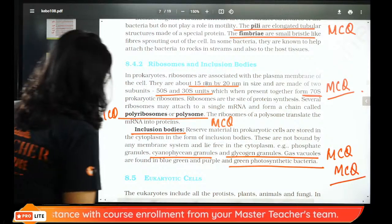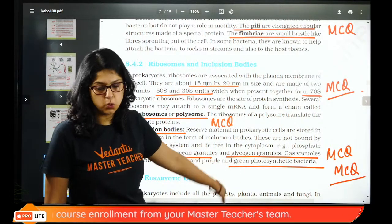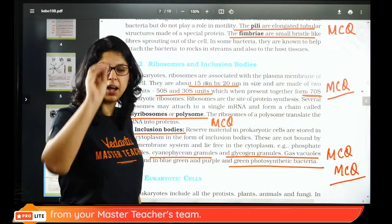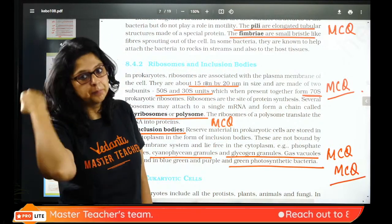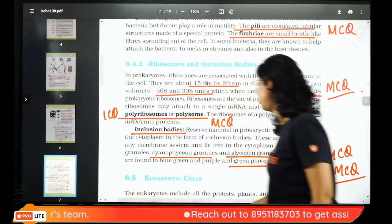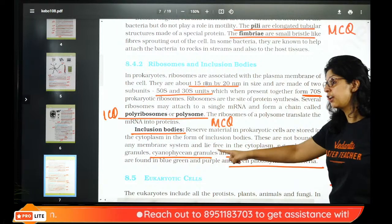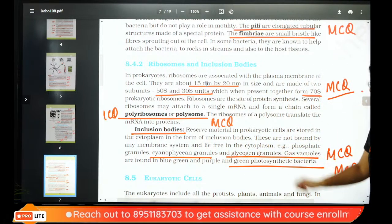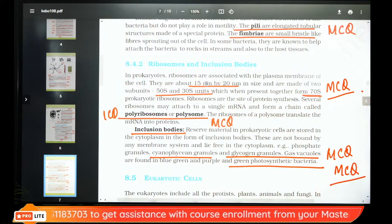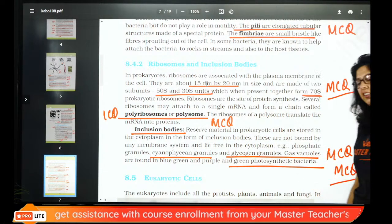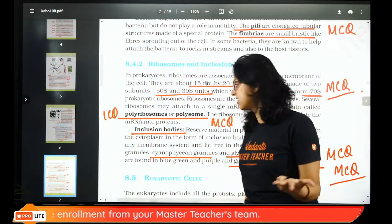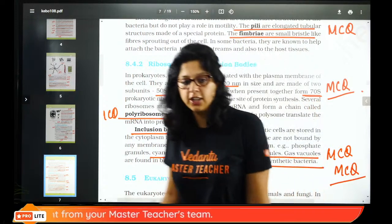Eukaryotic ribosomes: 80S with subunits 60S and 40S. Prokaryotic 70S has subunits 50S and 30S. Prokaryotes also have inclusion bodies — they engulf food or foreign material and form inclusion bodies. These can contain phosphate granules, cyanobacterial starch, glycogen, or gas vacuoles to help photosynthetic bacteria float.